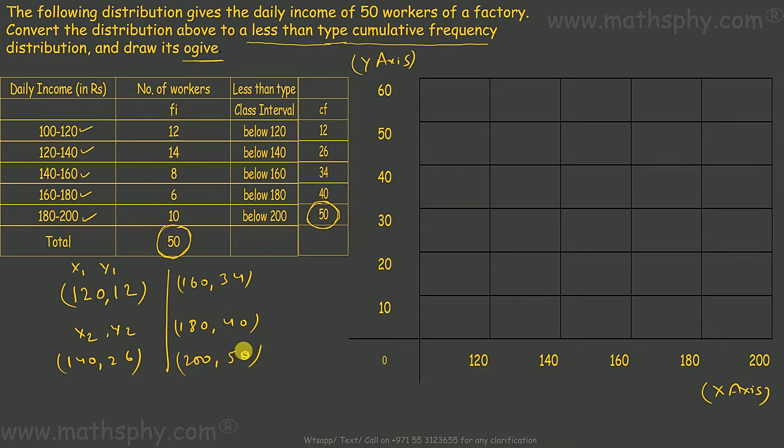We have 1, 2, 3, 4, 5. 5 coordinates. First coordinate is 120 to 12. 120 is this. This is 10. So, slightly above 10 we have 12. So this will be my first coordinate 120, 12.